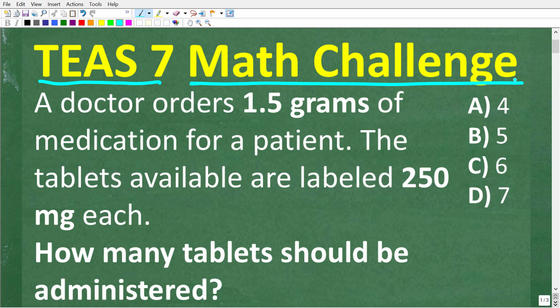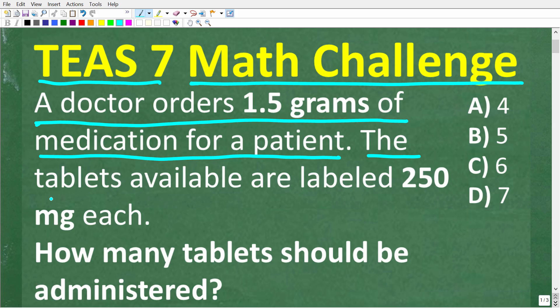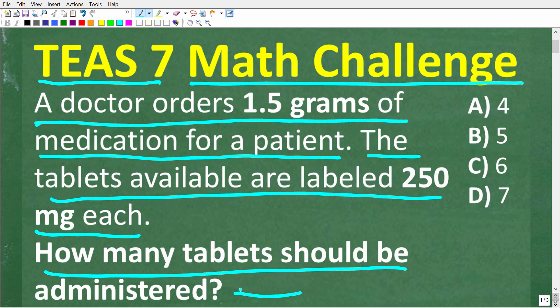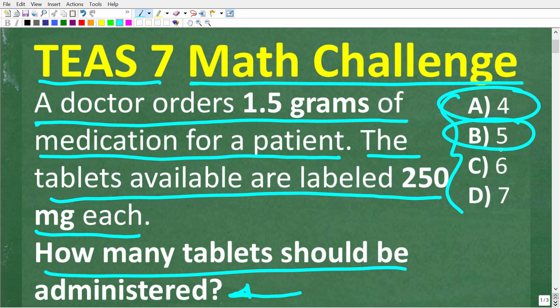This goes to the heart of being a nurse, so let's take a look at this example problem. A doctor orders 1.5 grams of medication for a patient. The tablets available are labeled 250 milligrams each. How many tablets should be administered to the patient? The multiple choice answers are: A) 4, B) 5, C) 6, and D) 7.